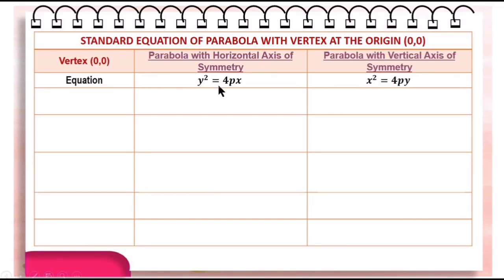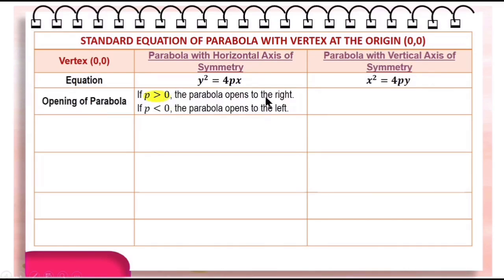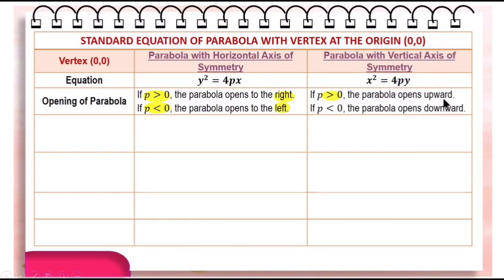Again, if the equation is quadratic in y, the opening of the parabola is either right or left. If the equation is quadratic in x, it's either upward or downward. So given only the equation, you can easily identify the parabola: if quadratic in y, it's either right or left; if quadratic in x, it's either upward or downward. Now, if p is greater than zero, the parabola opens to the right; if p is less than zero, it opens to the left. Similarly, if p is greater than zero in x² = 4py, it opens upward; if p is less than zero, it opens downward.